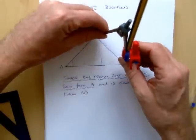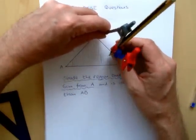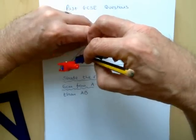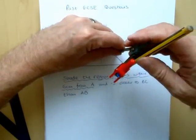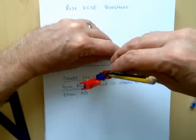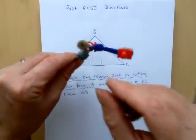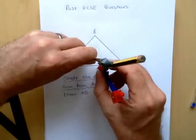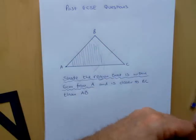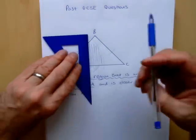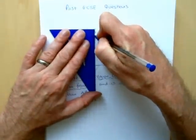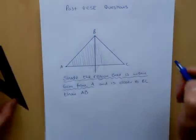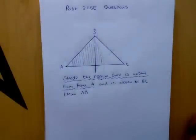So let's construct the angle bisector. We need to make a mark on both lines that's the same distance from B — there and there. Then construct another arc from those original arcs. I'll draw that line again. The line I've just drawn is the angle bisector, not the perpendicular — the angle bisector.